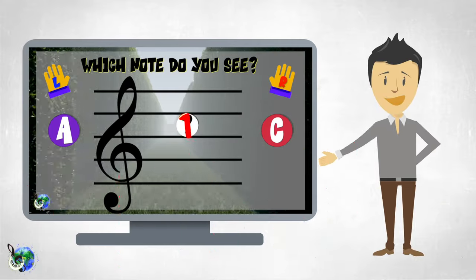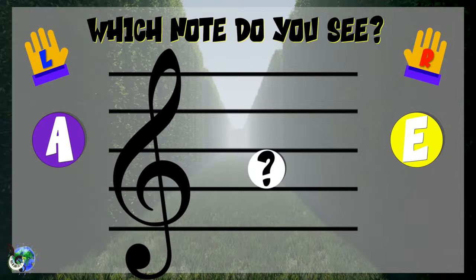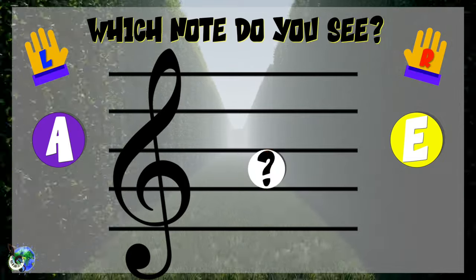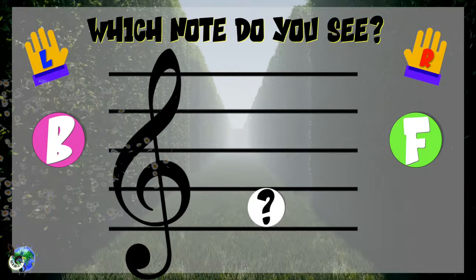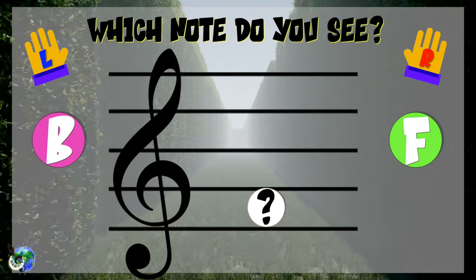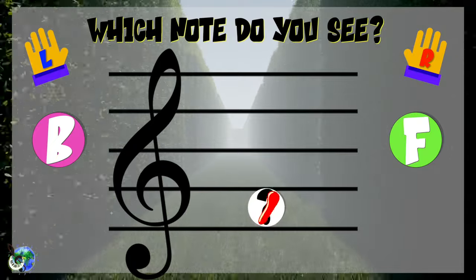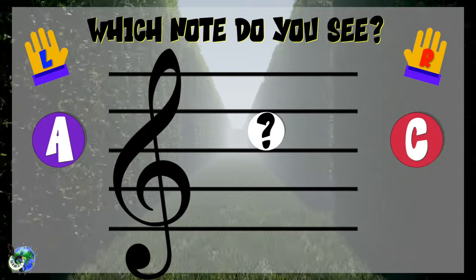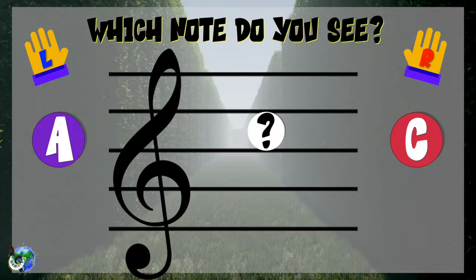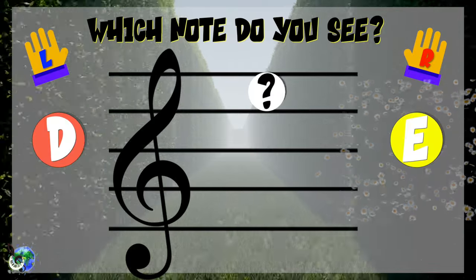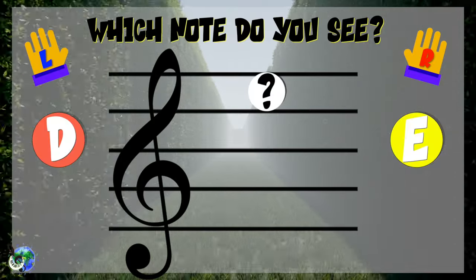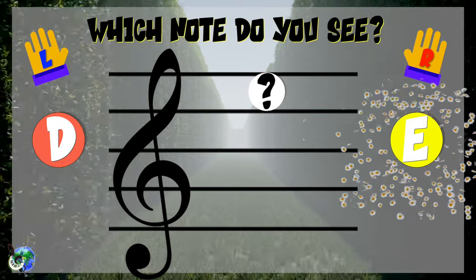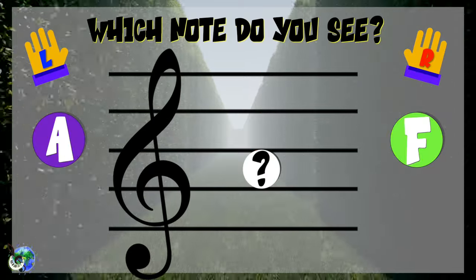Here we go! Which note do you see? 3, 2, 1 — A. Which note do you see? 3, 2, 1 — F. Which note do you see? 3, 2, 1 — C. Which note do you see? 3, 2, 1 — E.